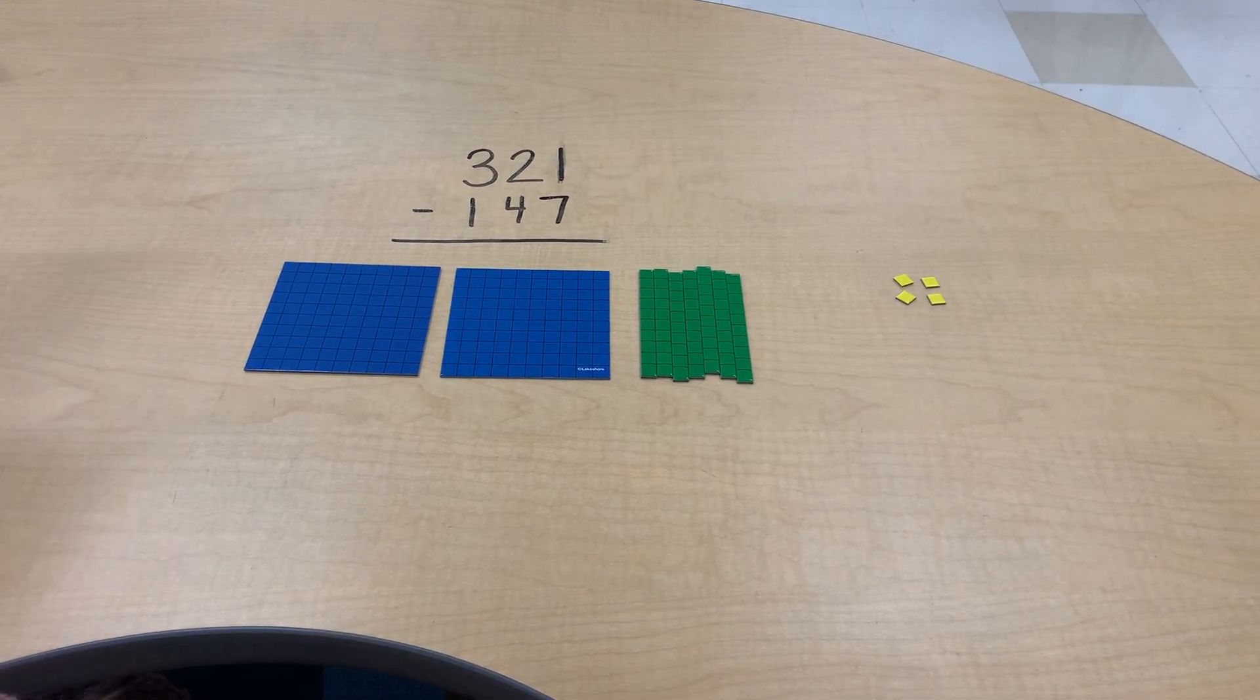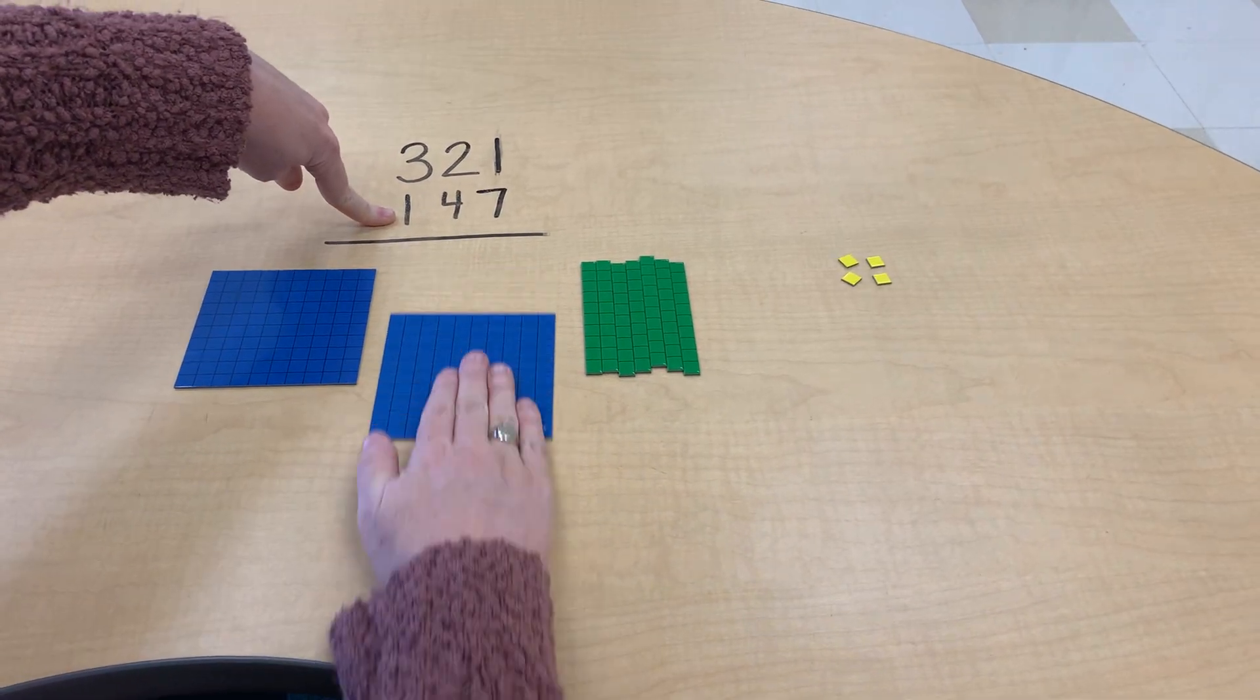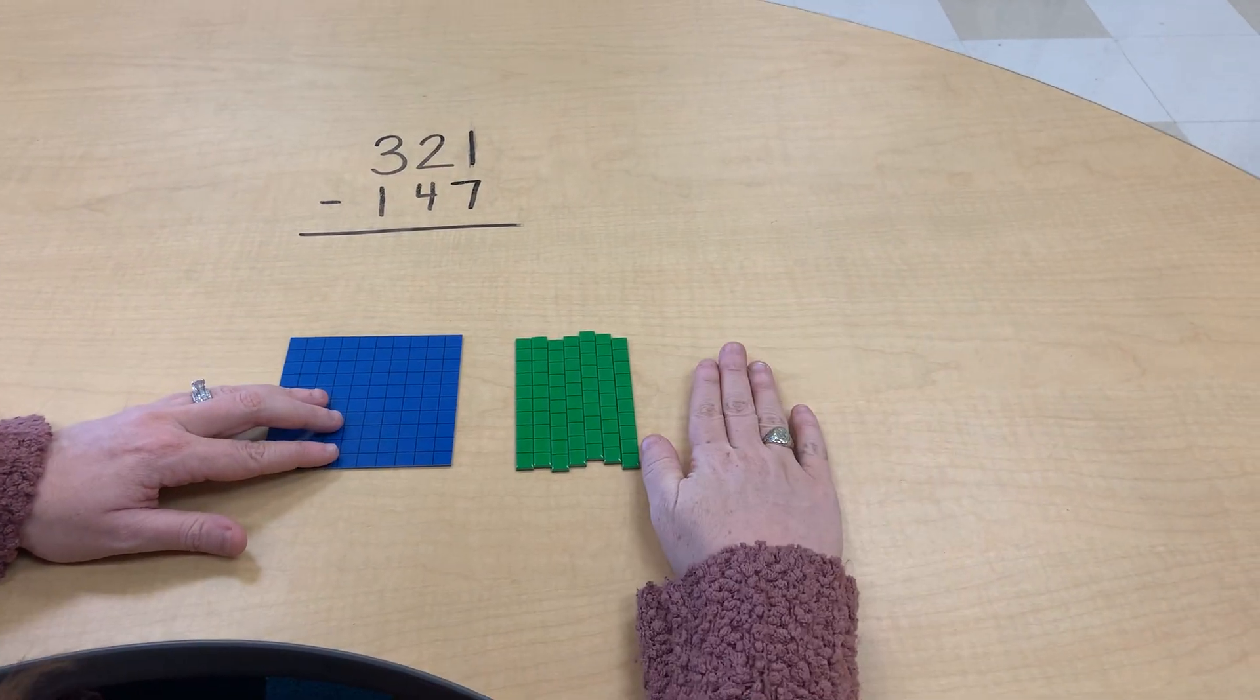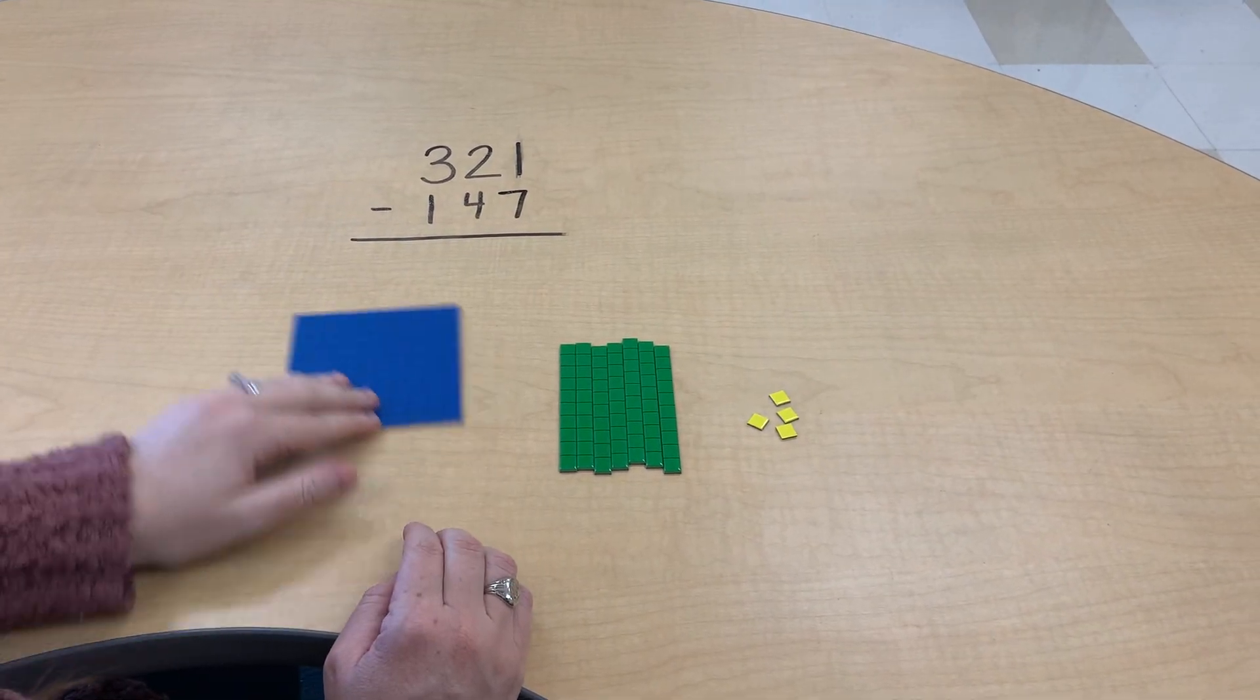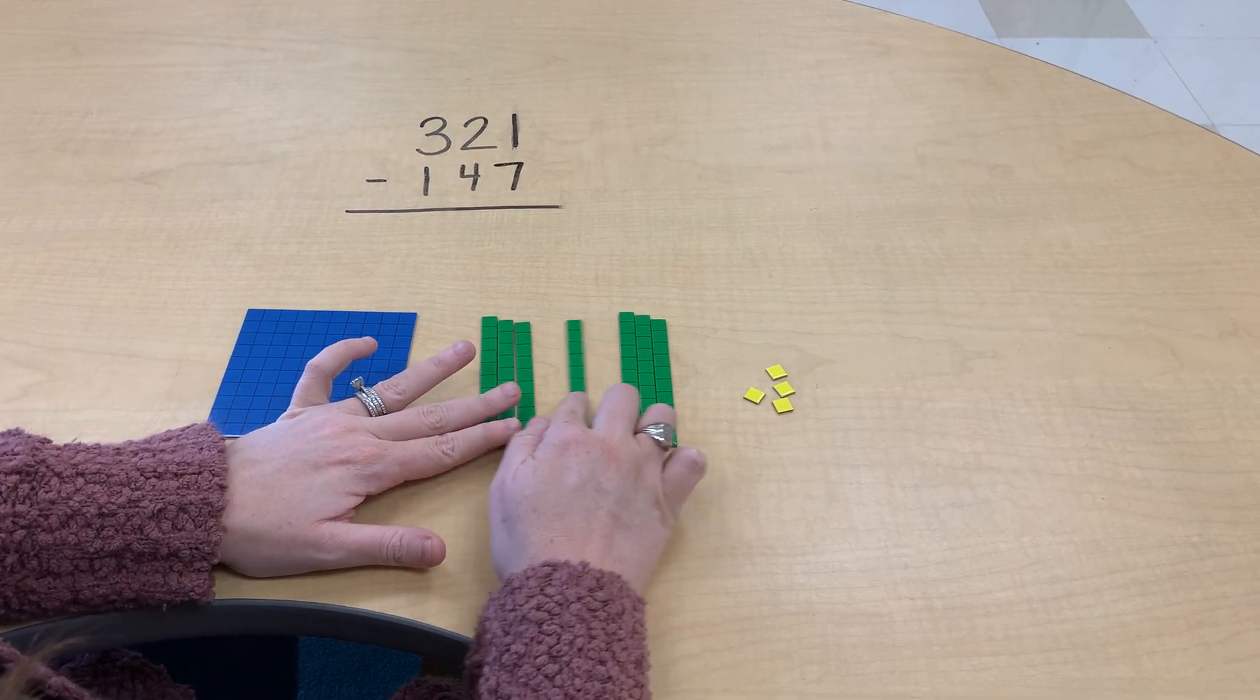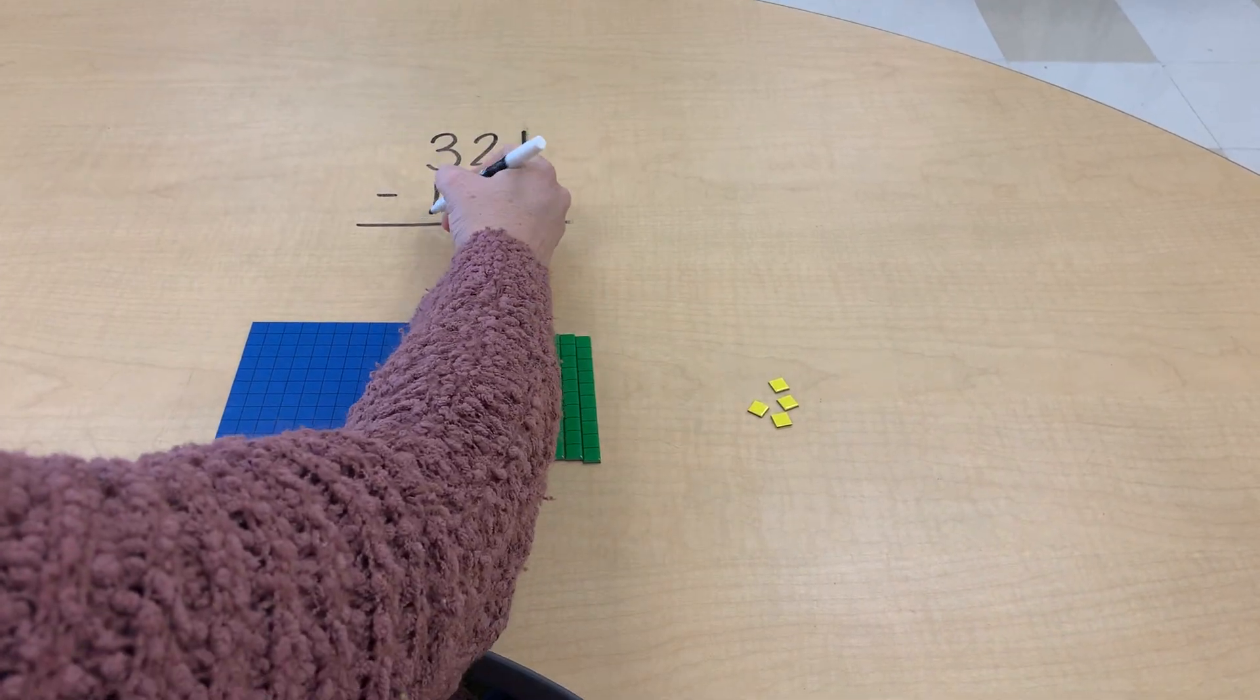Now I'm going to take away one hundred. I do have one hundred here, so I can take that away. And this is what I have left over. So three hundred and twenty-one minus one hundred forty-seven is one hundred, ten, twenty, thirty, forty, fifty, sixty, seventy, one hundred seventy-four. So I'm going to write that answer here.